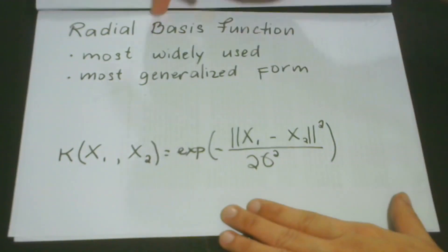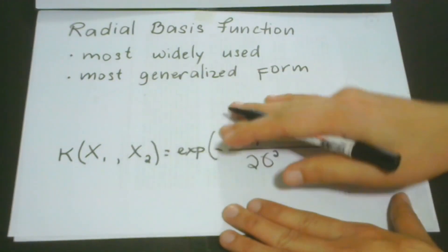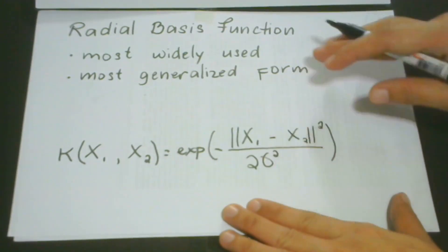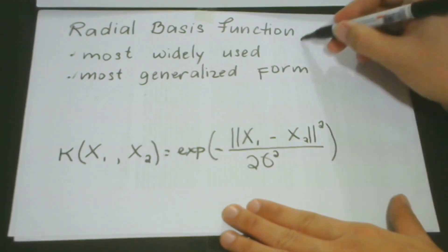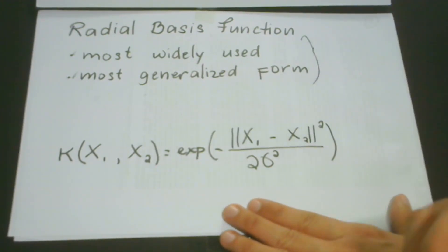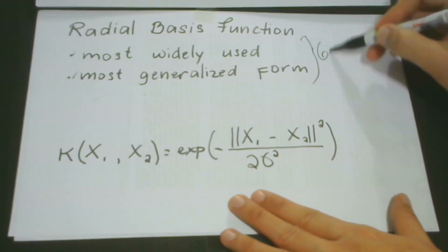So first is that a Radial Basis Function is the most widely used form of kernelization. And also, it is the most generalized form of kernel function. And maybe you would like to ask me, why is it first and foremost widely used? And why is it the most generalized form?